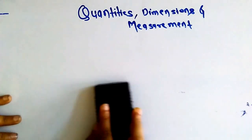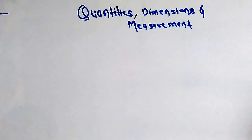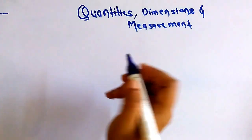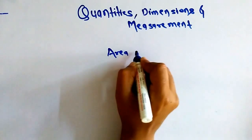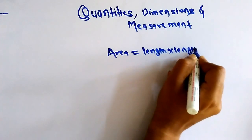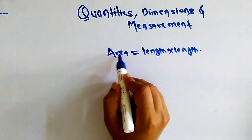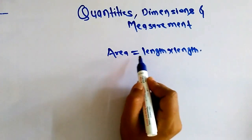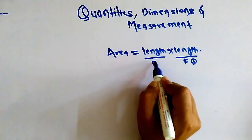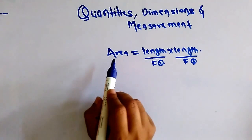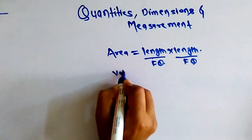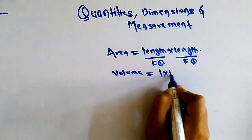We have studied fundamental quantities; now I will explain derived quantities. Derived quantities are those quantities which are derived from fundamental quantities. Suppose I am talking about area — area can be written as length × length. So area depends upon and is expressed in terms of the fundamental quantity of length.